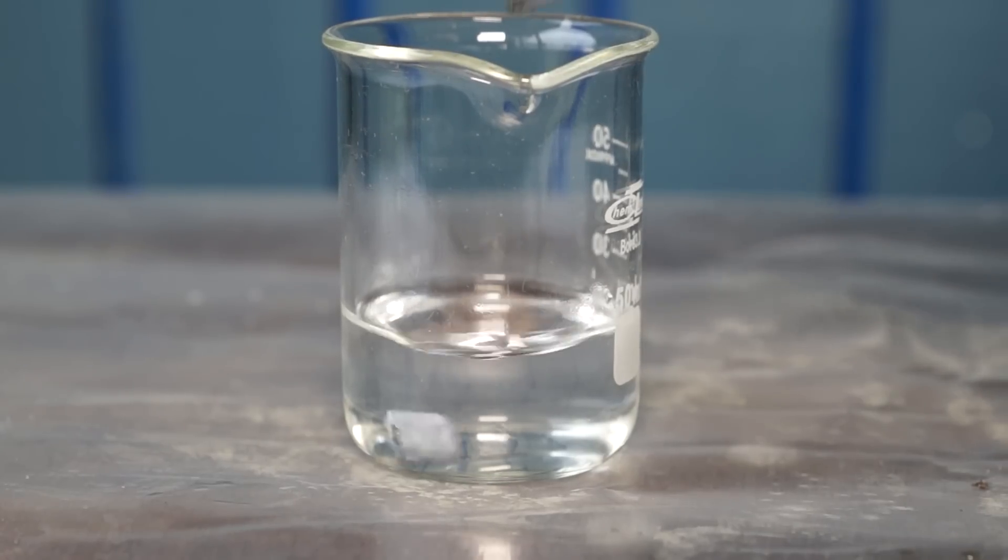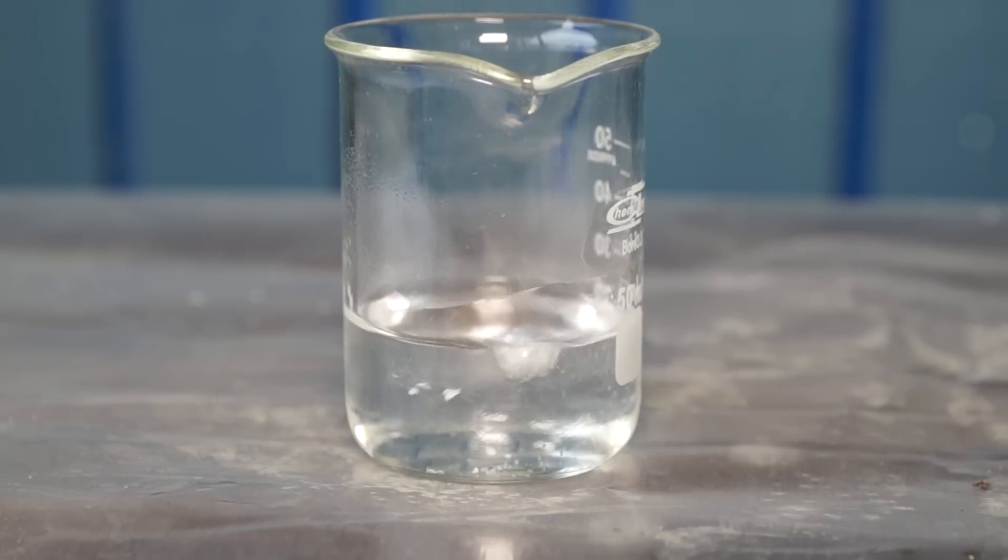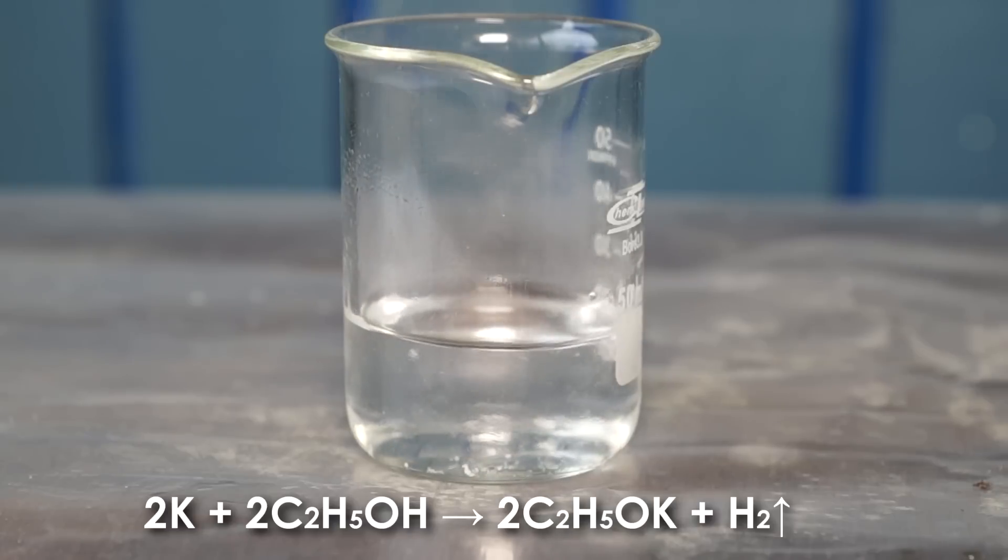In the last experiment, I took a small piece of potassium and put it into a cup with ethanol. Potassium rapidly dissolved in ethanol to form potassium ethanolate and hydrogen.